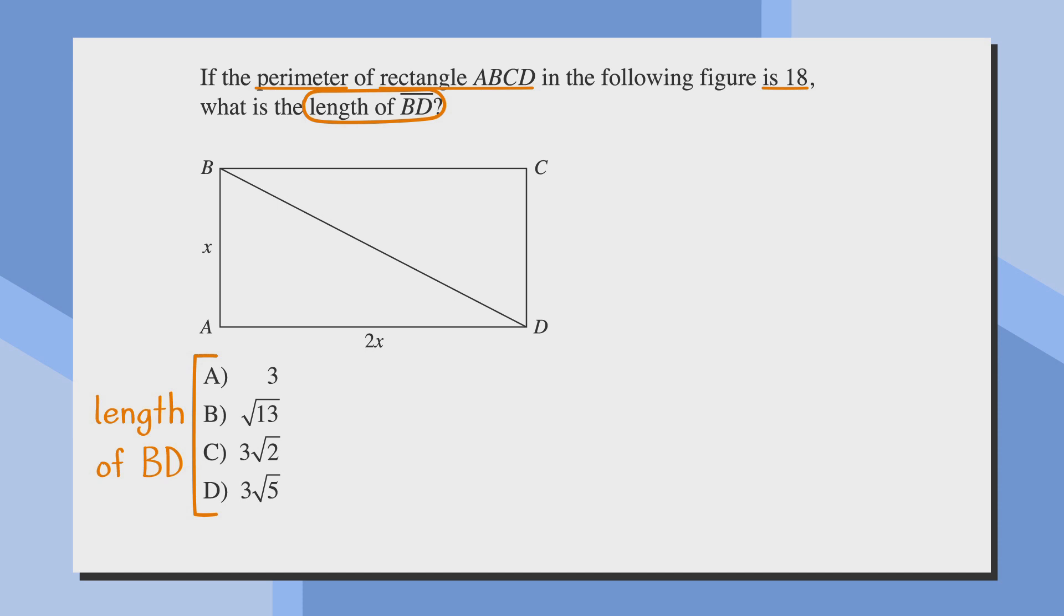The question tells us ABCD is a rectangle, so we know that AB = CD, which means they both have a length of x, and we know that AD = BC, so they both have a length of 2x. The question tells us that the perimeter of the rectangle is 18, so x + x + 2x + 2x = 18. A bit of addition and we get 6x = 18, and then by dividing both sides by 6, we find that x = 3.